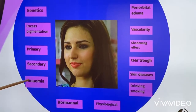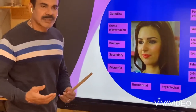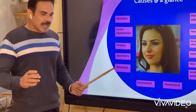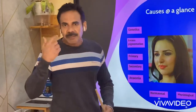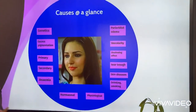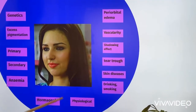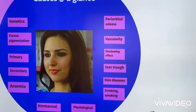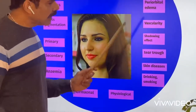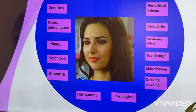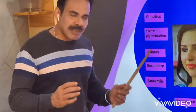Hyperpigmentation around the eye can be due to anemia - decreased hemoglobin in the blood gives less oxygen supply, resulting in a dull look under the eye. It can also be hormonal - various hormonal factors can influence under-eye pigmentation, including during pregnancy or after menopause. Periorbital edema - swelling around the eye - can also lead to pigmentation. Increased vascularity causes more blood supply to that area, giving a bluish or purplish look.